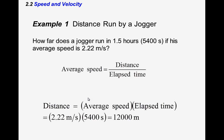For example: how far does a jogger run in one and a half hours, which is 5,400 seconds, if his average speed is 2.22 meters per second? Since distance equals average speed times time, we get 2.22 meters per second times 5,400 seconds, which gives us 12,000 meters.